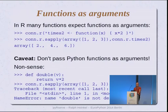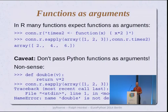This example also shows that PyRserve can handle errors raised on the R side. When an expression is evaluated, I look at the result and can detect if an error was raised, dragging the error message from R into Python and raising an exception with the message R sends. So 'name double is not defined' is basically what R tells me.